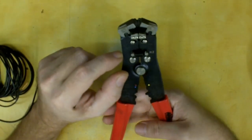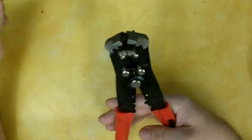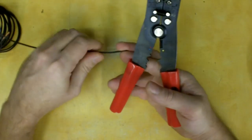They will strip between 24 gauge all the way down to 10, so that's a pretty big wire on 10. But let me just show you how they work, man. They're awesome.